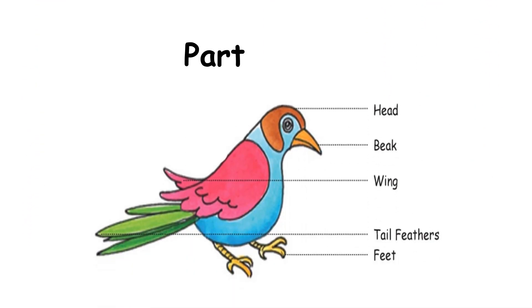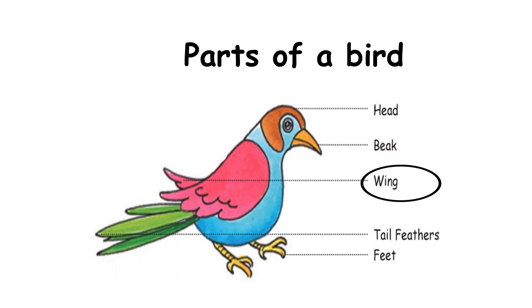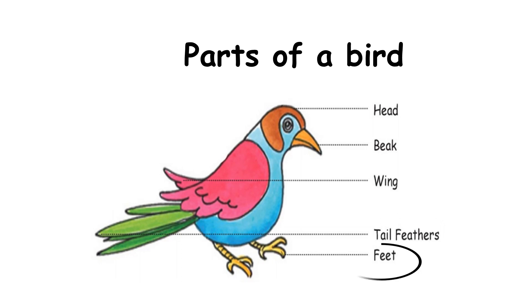Main parts of a bird are head, beak, wing, tail feathers and feet.